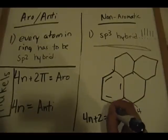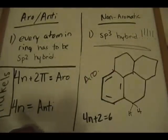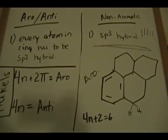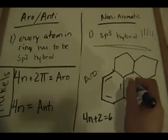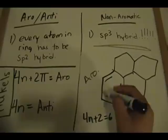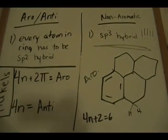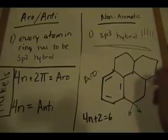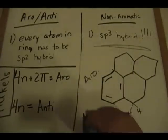The pi electron count for the aromatic piece is two, four, six — six pi electrons, satisfying 4n + 2, so the overall molecule is aromatic, not non-aromatic. The rule is: if you can find any aromatic piece on a large molecule, that makes the whole molecule aromatic, even if there are sp3 hybridized carbons elsewhere. We'll go over another example of this type.